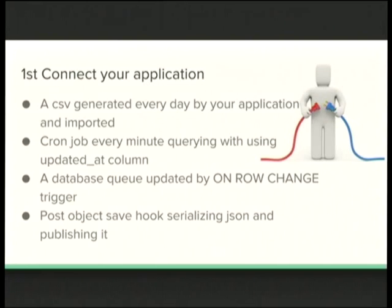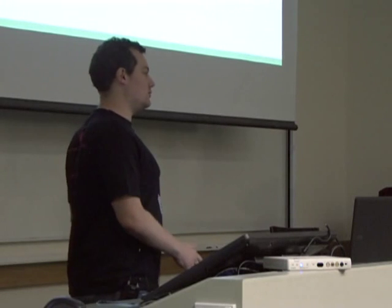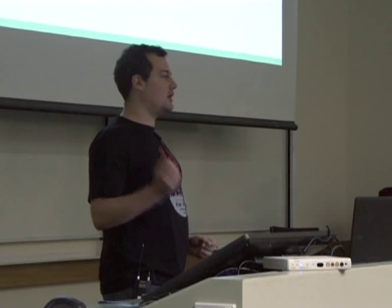You can also run a cron job every minute, read your database, check if something's changed, serialize and send to Elasticsearch. Then you're just one minute behind your main database, which is probably enough for most people. You can also use database triggers with on-row-change to create a queue and read it every second, so you're just one second behind. Or, in our case using PHP, we added a post-save hook — you can do the same in Django — which posts to RabbitMQ, and then we have a consumer reading from RabbitMQ and indexing into Elasticsearch.